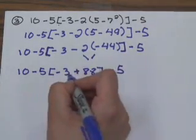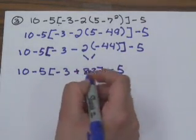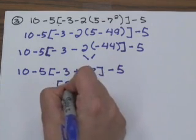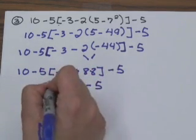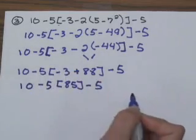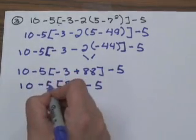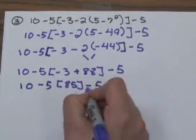Inside the grouping symbols, I have minus 3 plus 88. That's going to give me 85. Just bringing everything else down. Now I have 10 minus 5 times 85 minus 5.